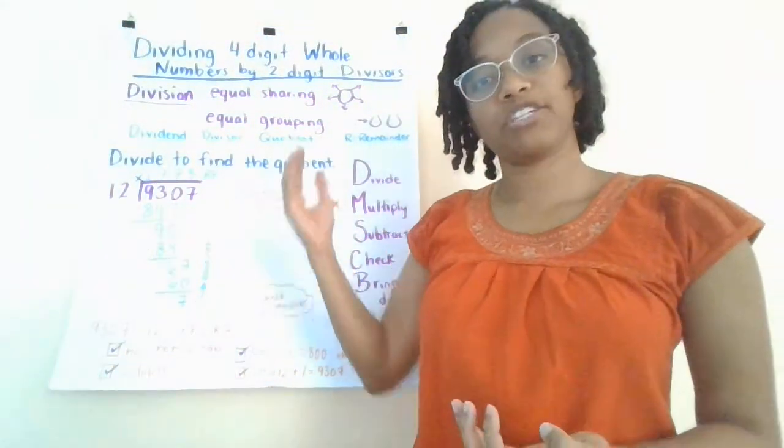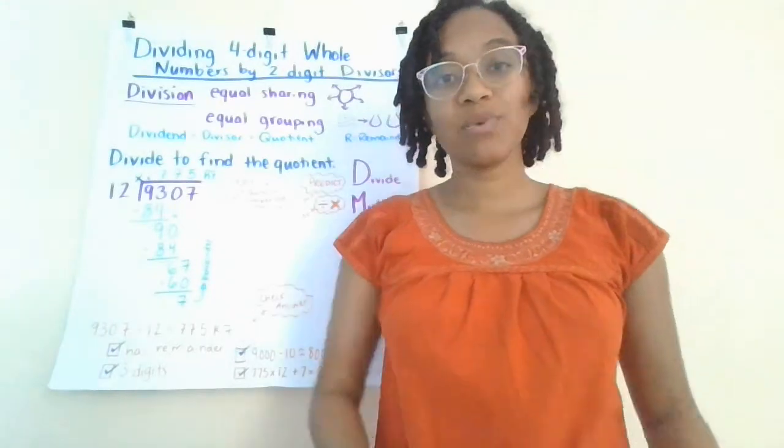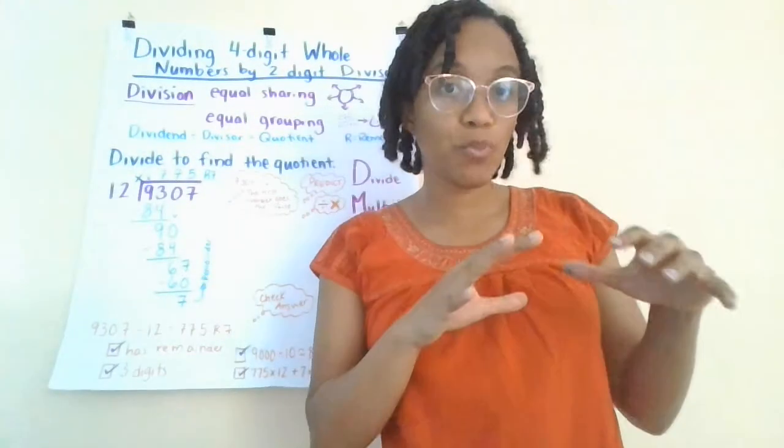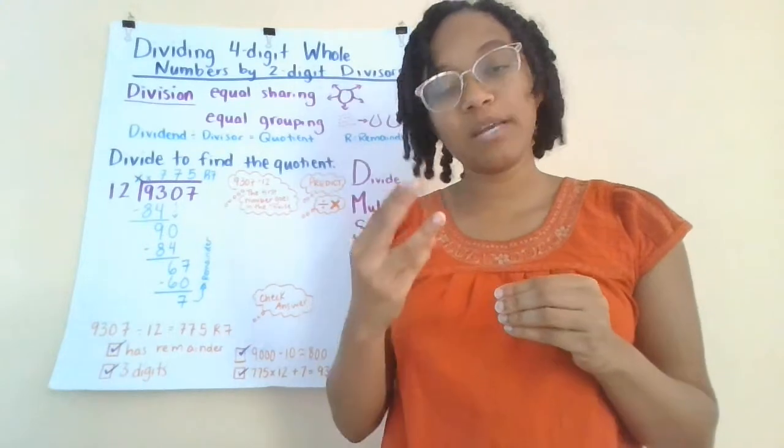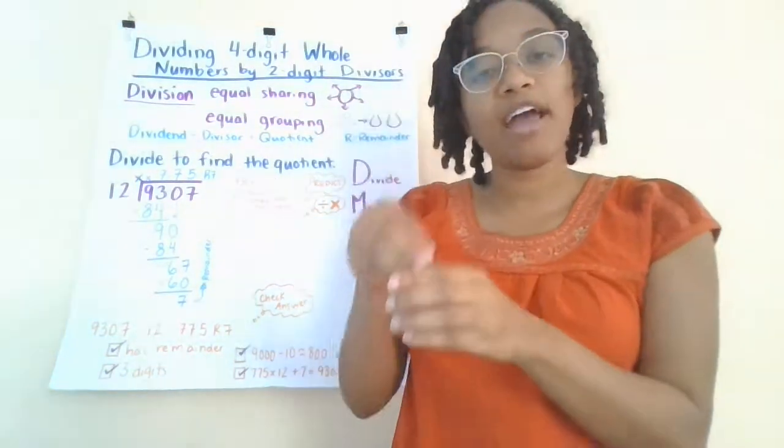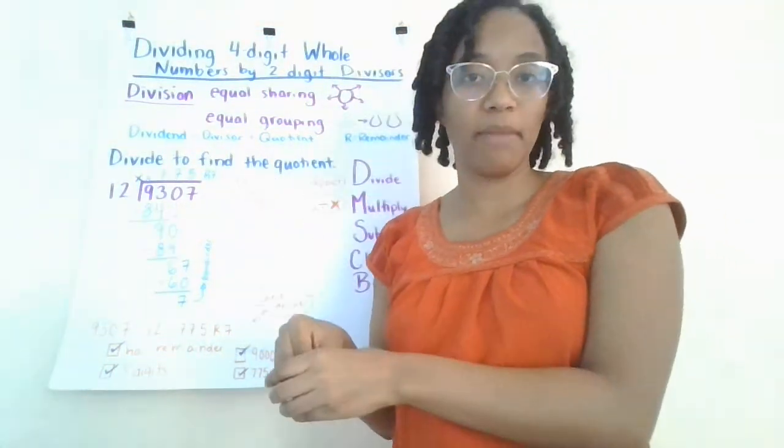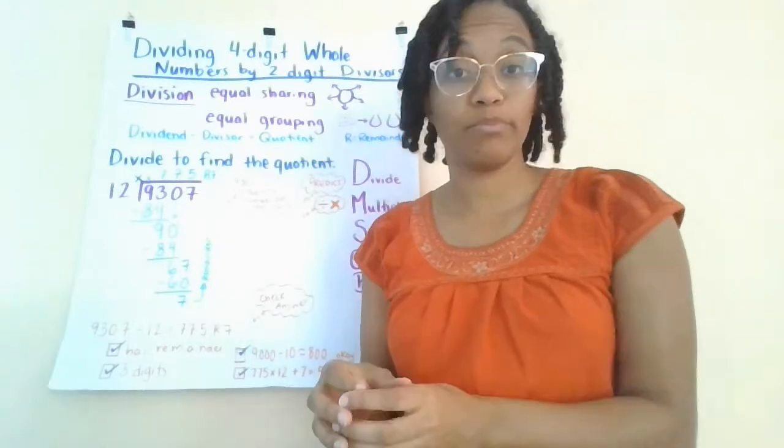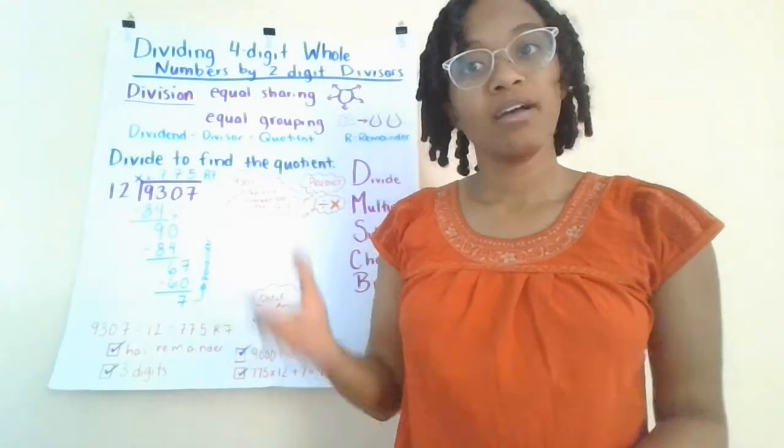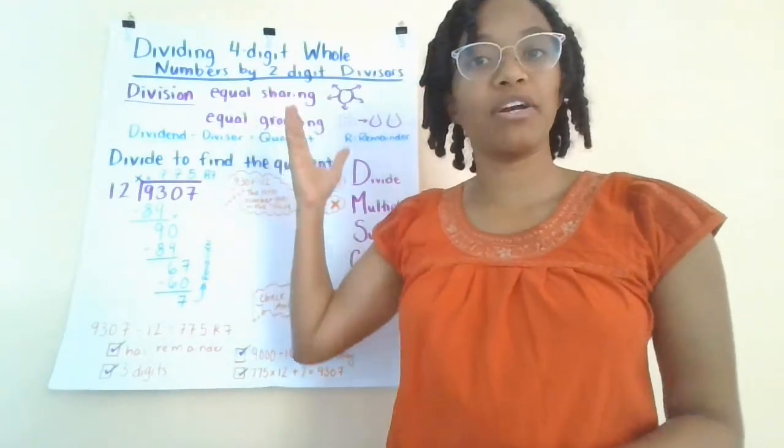You can also do division with equal grouping. That's when I say I'm going to take this huge bag of candy and make giveaway bags with three pieces of candy each. So in every single bag I'm putting the same amount. I'm making equal groups. That's equal grouping.